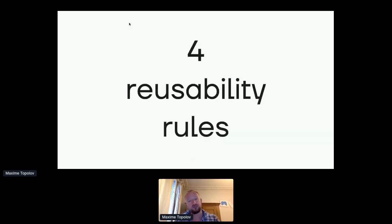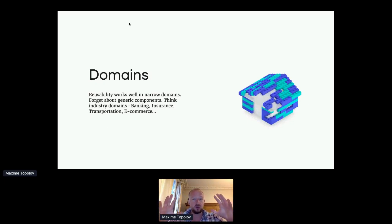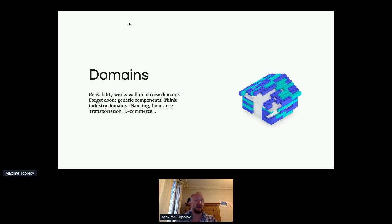Let's focus on some basic rules — how could you enable reusability inside your organization and inside your teams? We came up with four rules. The first one, the most important one — all the research around reusability shows us that the only way to make it work is to create it inside domains. Software component reusability works inside domains and works very badly with generic components. So if you work in banking, insurance, transportation, or e-commerce, you will see a lot of potential reusability there.